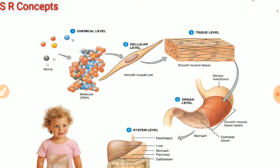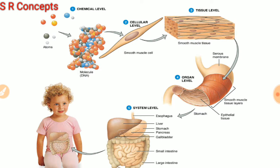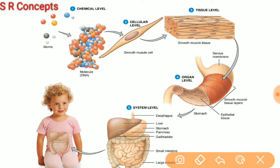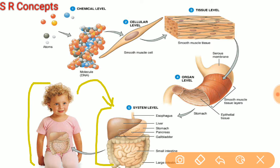Looking at these pictures, the human body or any animal body is made up of a group of organ systems. Here you can see an image of the digestive system. Every organ system is made up of a group of organs which together perform a particular function.